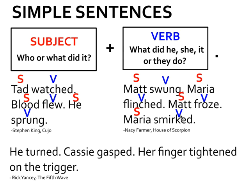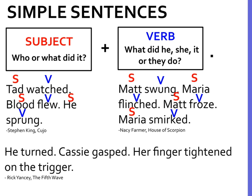From Rick Yancey's The Fifth Wave — my favorite book I read this summer: 'He turned. Casey gasped. Her finger tightened on the trigger.' That last one is not a simple sentence because it has more than just a subject and just a verb. Our simple sentence for that last sentence is going to be 'her finger tightened.'